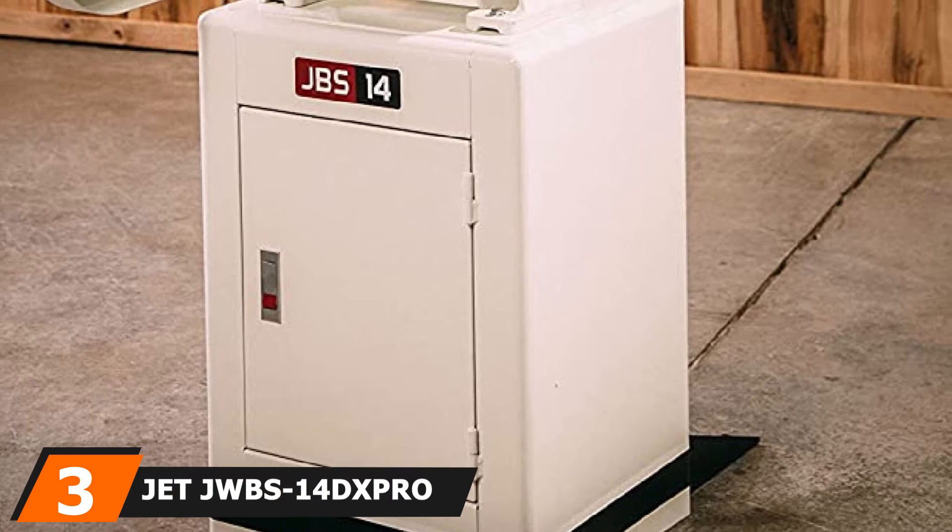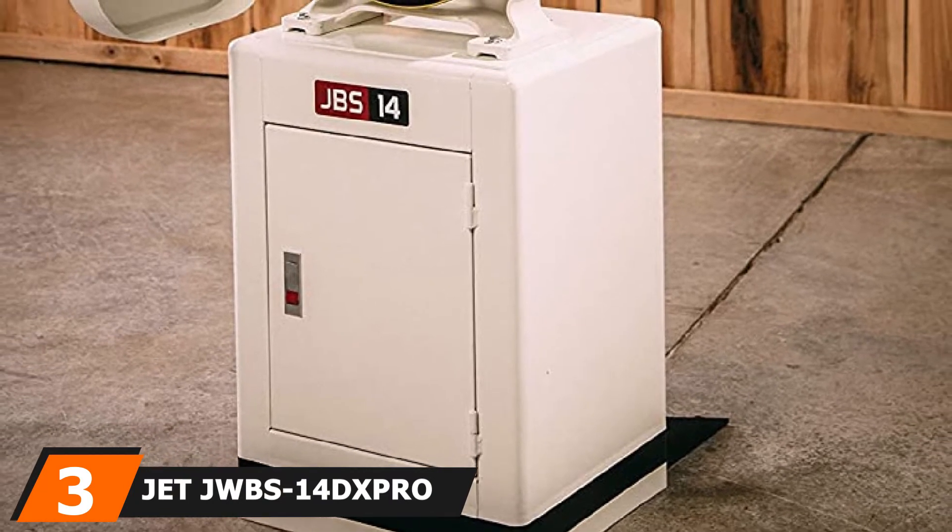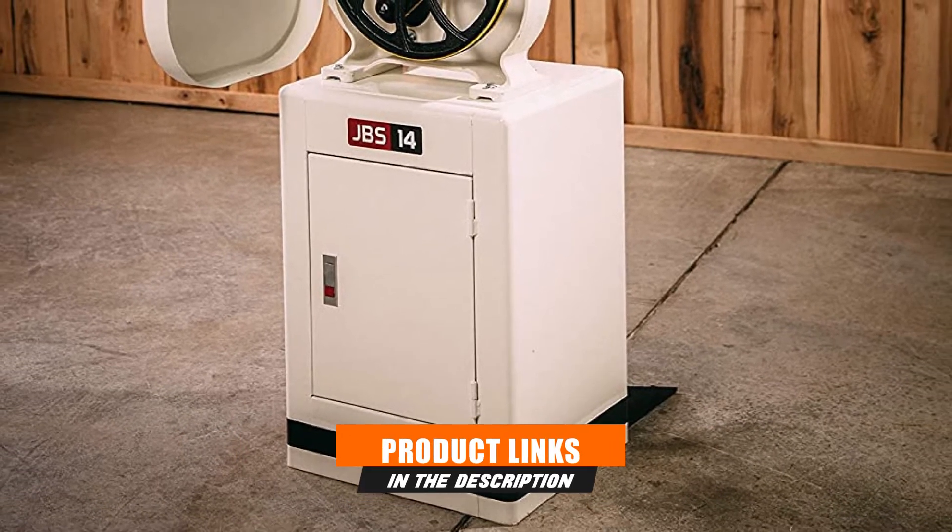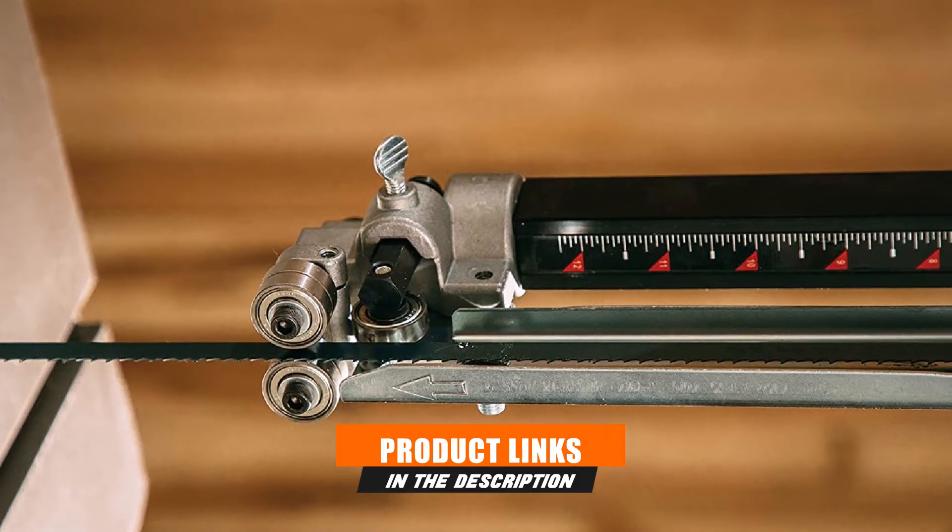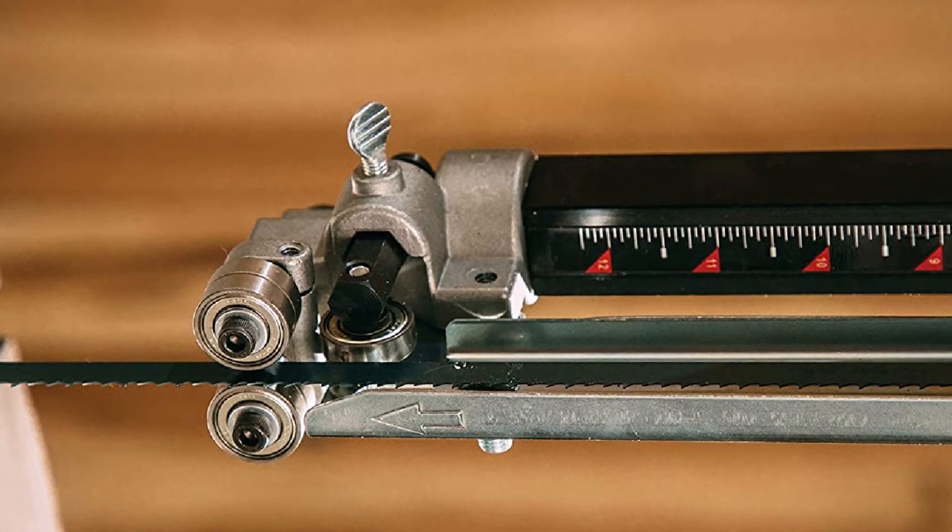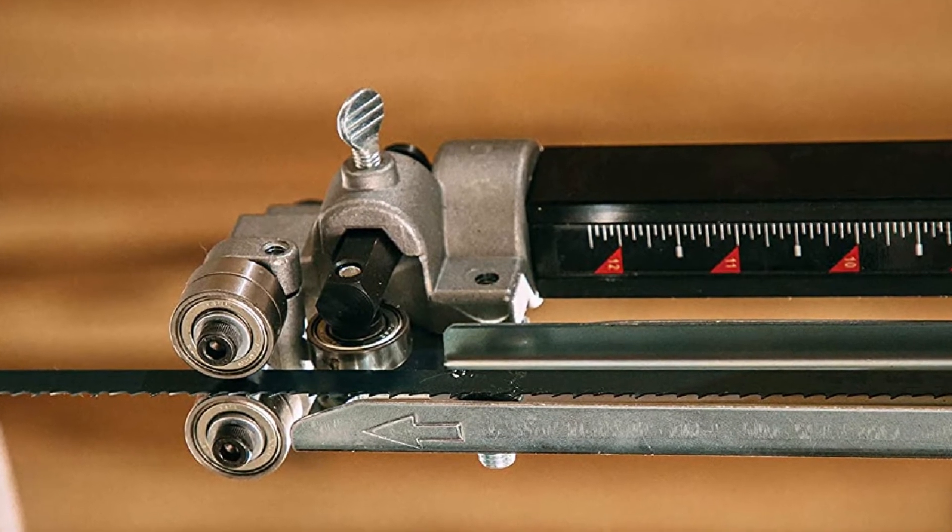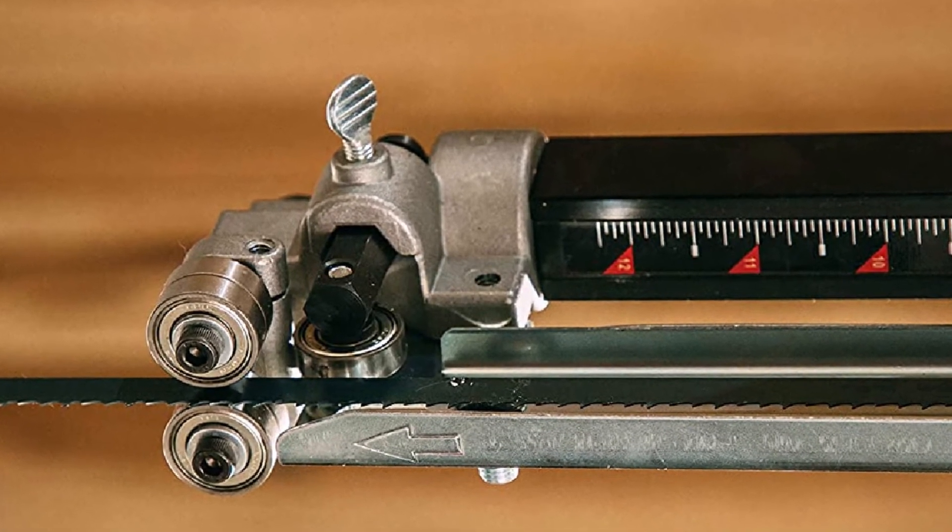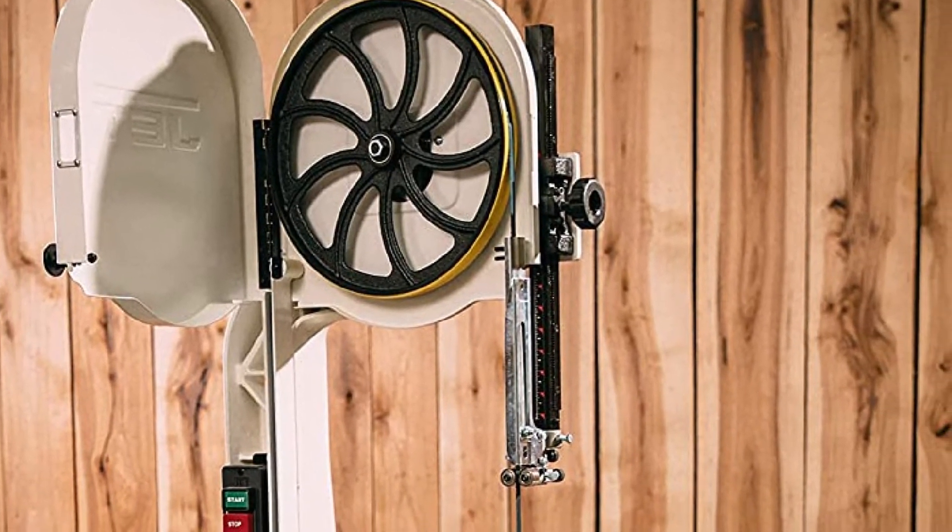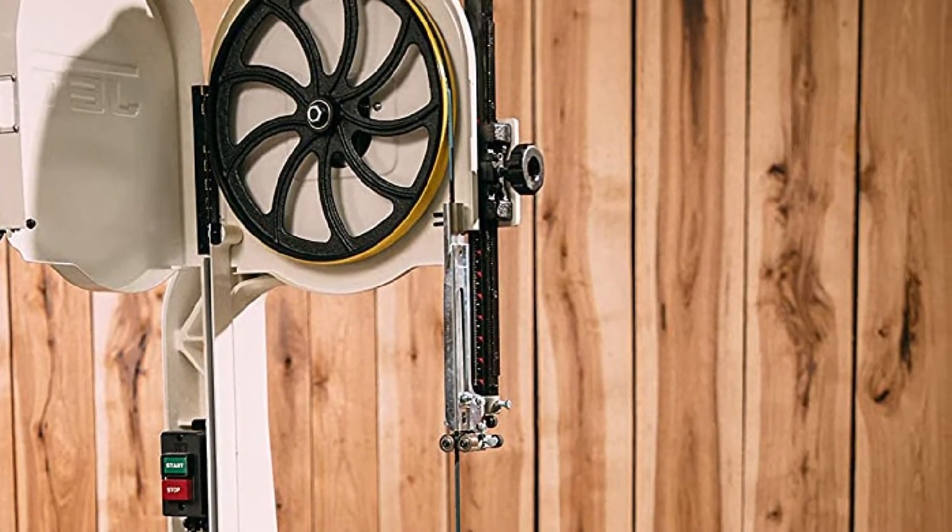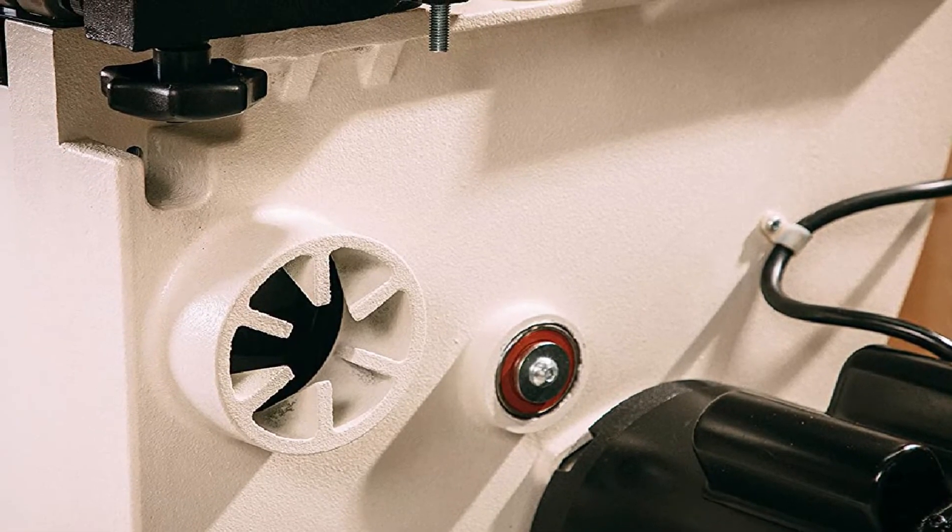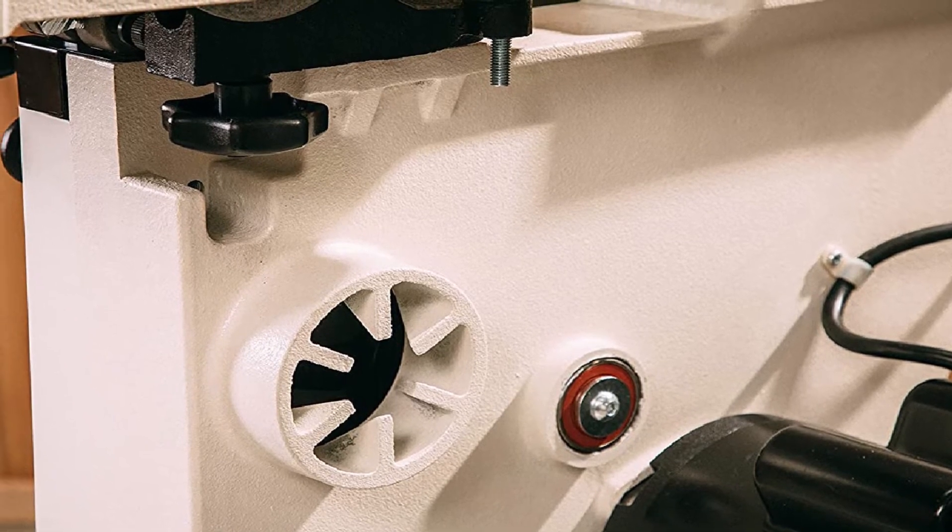The number 3 position is held by JET JWBS-14DX Pro 14-inch Deluxe Pro Bandsaw. This tool, the JET JWBS-14DX Pro, is one of the best-designed woodworking bandsaws you can get out there. If you want a reliable machine, then this is your product. It comes with a large cutting capacity of 13-1/2 inches wide and 12 inches height. These dimensions give you the flexibility to work with almost any lumber without striving so hard to install a riser block. You will find the blade as well as the safety guard on this bandsaw easy to adjust.